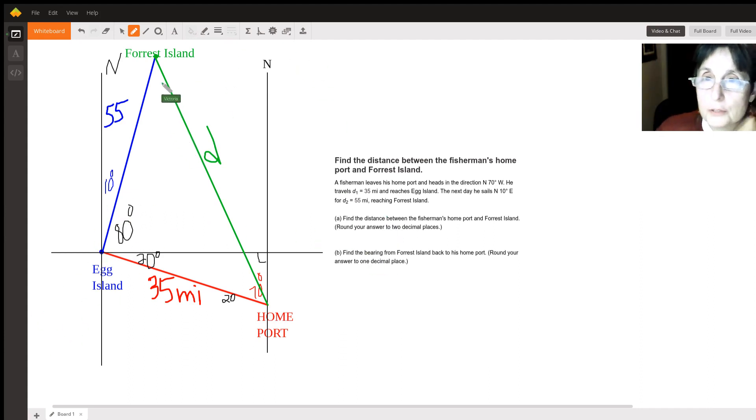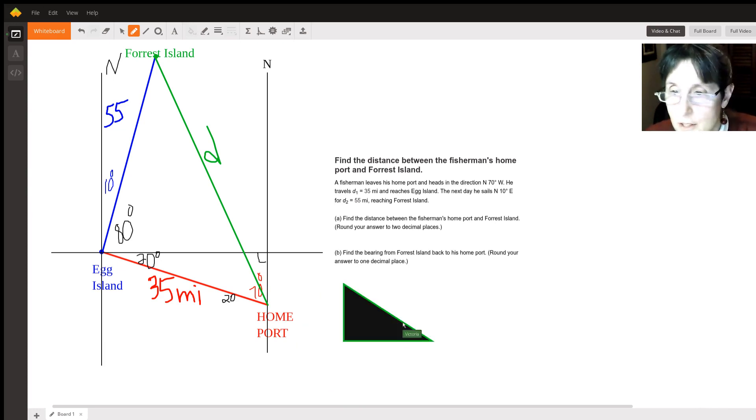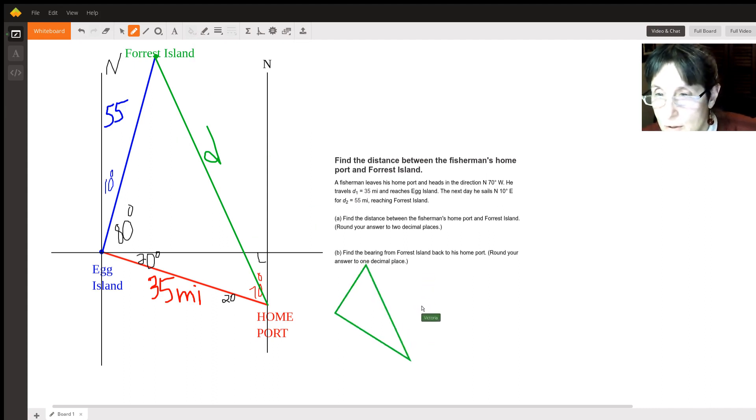Now if we would just redraw this little triangle down here without everything on it. So let's say this is our triangle, and I really don't want it to be filled in dark. Let's turn it so it looks similar and let's make it black.